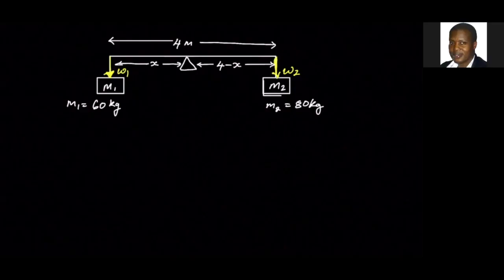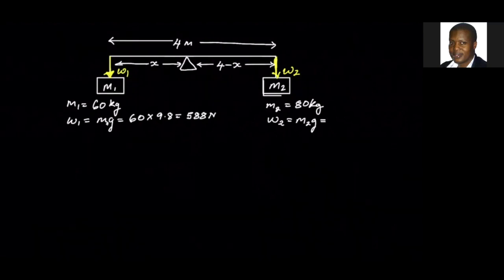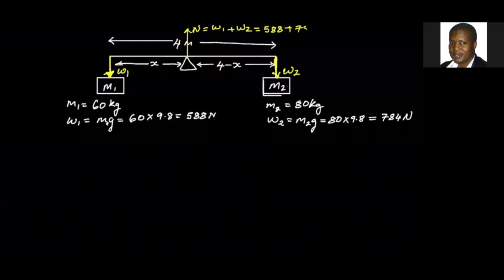We start first by calculating the weight, that gives us 588 newtons. And w2 will be m2g, which is 80 multiplied by 9.8, which is 784 newtons. Now let's calculate the torque. So we said there are those two forces and there should be the normal force that's pointing up, and the normal force will be w1 plus w2, which is 588 plus 784.